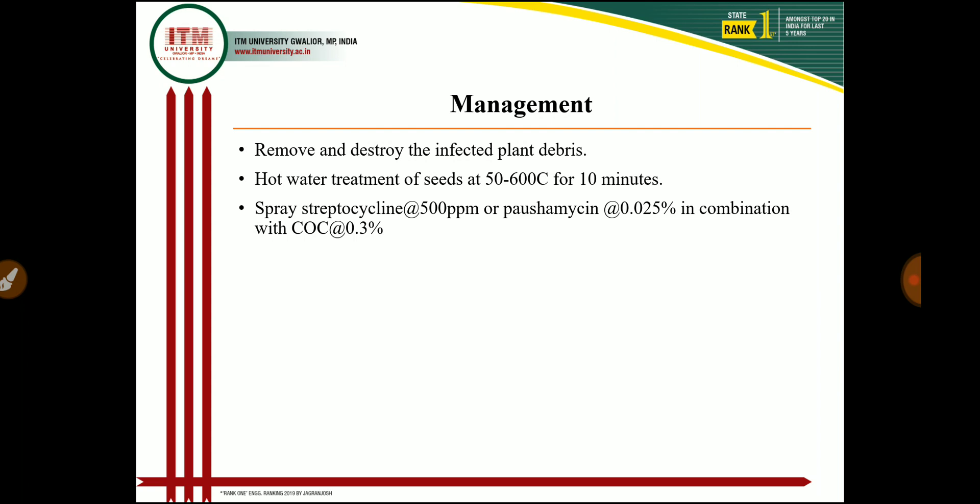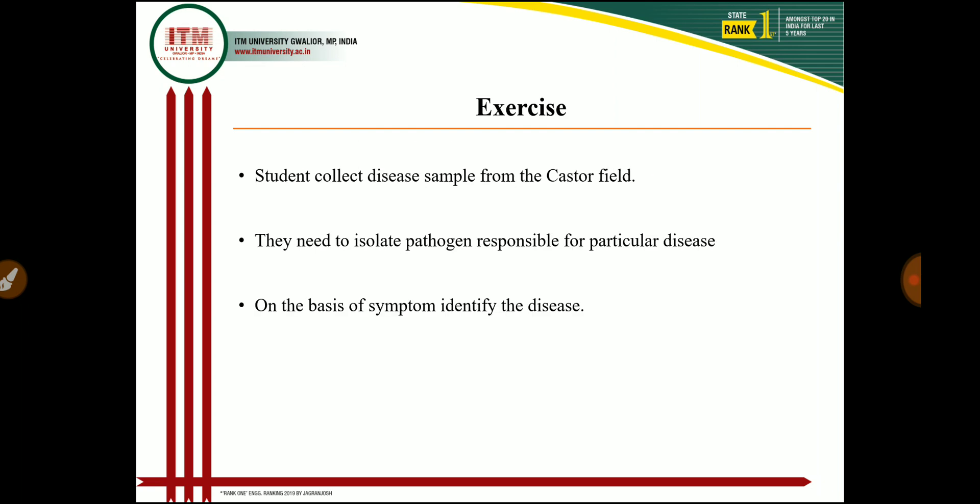In today's lecture I explained four diseases: castor wilt, phytophthora blight, gray mold, and bacterial leaf spot. If you have any doubt, contact me and I will try to solve your doubts. The exercise for students is: go to a castor field, collect a disease sample, make a herbarium file, return to the lab, prepare a slide, isolate the pathogens causing the particular diseases, and identify the diseases on the basis of symptoms.